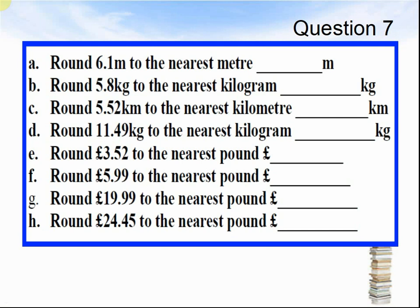Question 7. a. Round 6.1 metres to the nearest metre. b. Round 5.8 kilograms to the nearest kilogram. c. Round 5.52 kilometres to the nearest kilometre. d. Round 11.49 kilograms to the nearest kilogram. e. Round 3.52 pounds to the nearest pound. f. Round 5.99 pounds to the nearest pound. g. Round 19.99 pounds to the nearest pound. h. Round 24.45 pounds to the nearest pound. Pause the video until you are ready to see the answers.